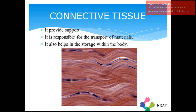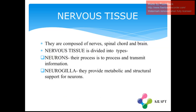Now let us learn about the third type of animal tissue, which is the connective tissue. Connective tissue provides support to the body and is responsible for the transport of materials. It also helps in storage within the body. As seen in the figure, the cells are linked or connected with each other with no gaps between them.